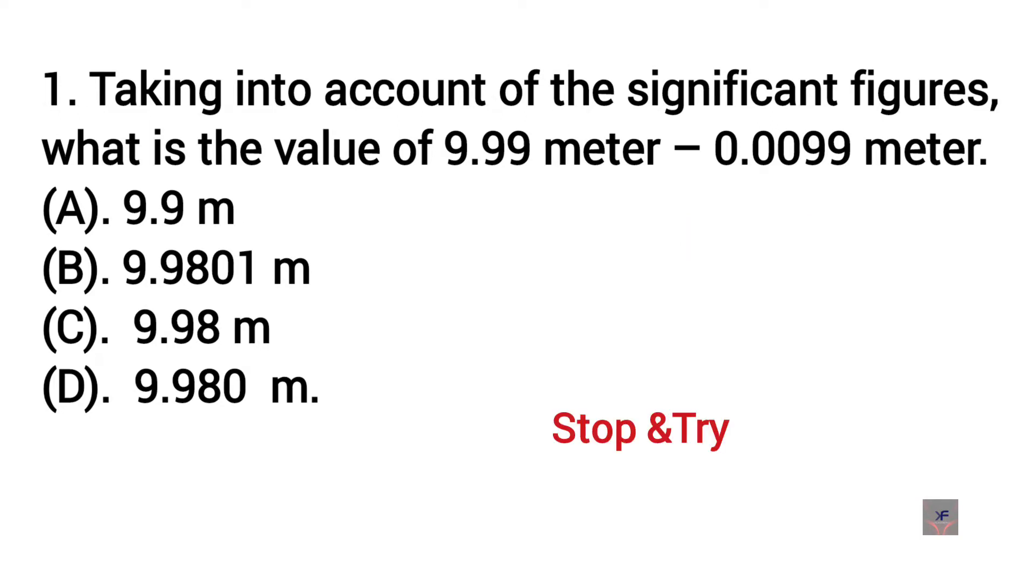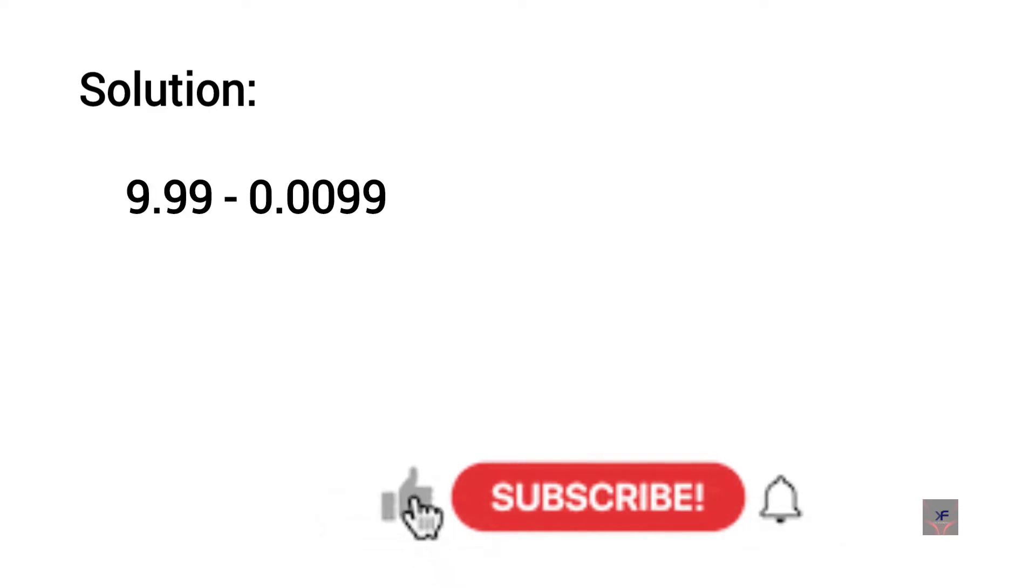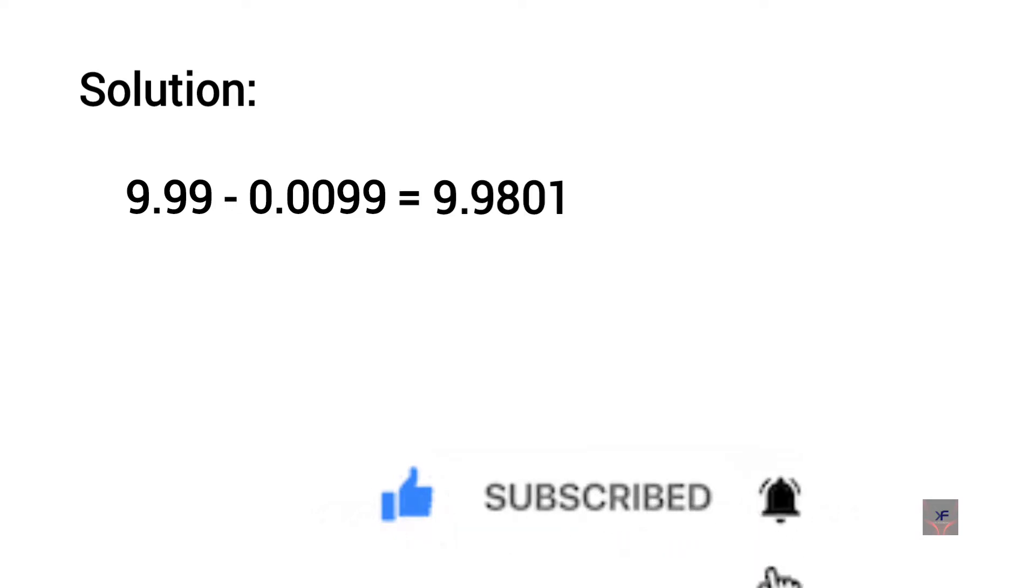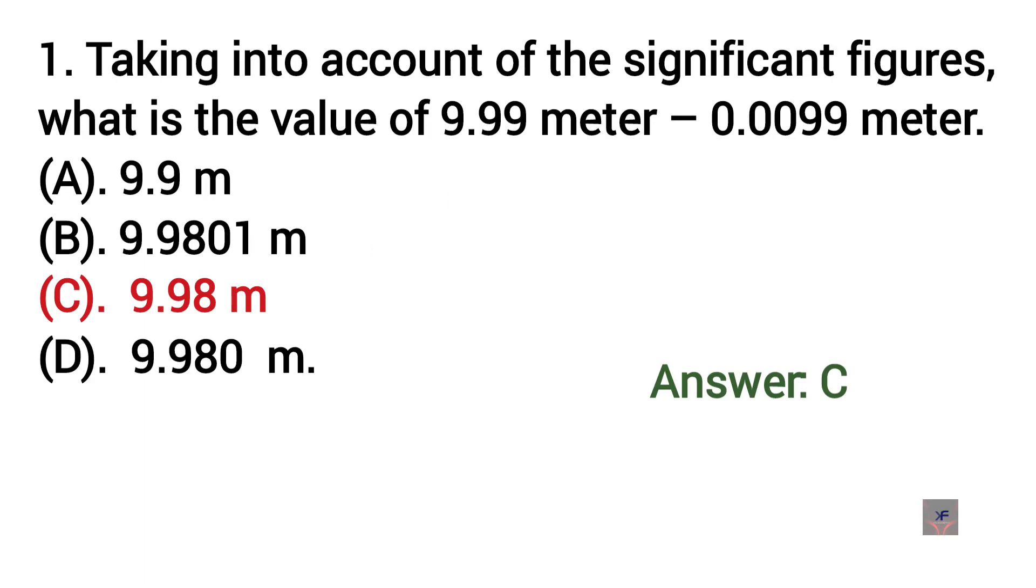What's the answer? Now let's find out the answer. In subtraction, the number of decimal places in the result should be equal to the number of decimals of the lesser number of decimal places. That is, 9.99 minus 0.0099 equals 9.9801. Take three significant figures only because the number of decimal places in the result should be equal to the number of decimals of the lesser number of decimal places. So it is 9.98. So the correct option is C.